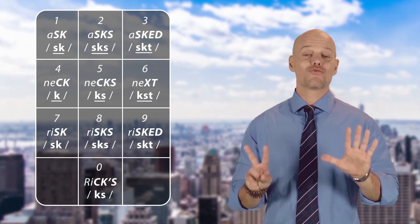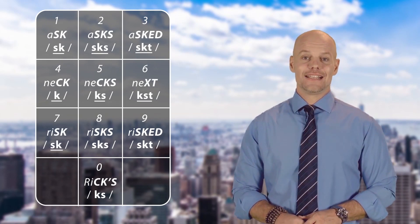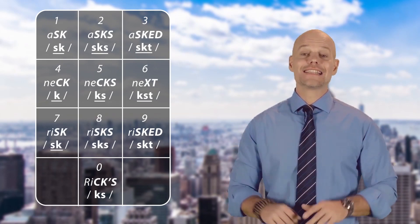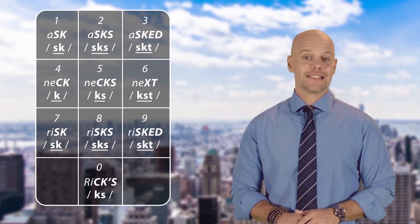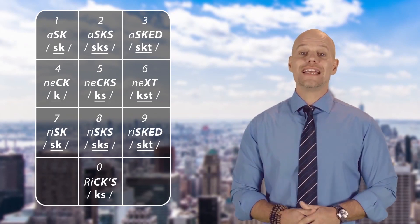Number 7 is risk. Number 8 is risks. Number 9 is risked. And number 0 is Rick's.